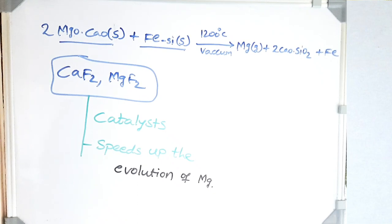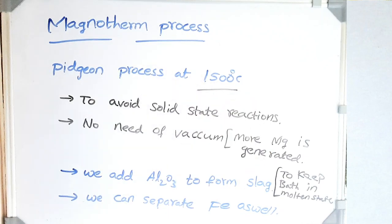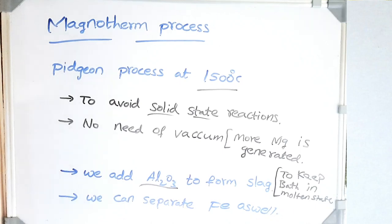The Magnotherm process operates at 1500°C to avoid solid–solid reaction issues. At this higher temperature, more magnesium is generated and we do not even need vacuum. Alumina is added to form slag and to keep the bath in liquid state, so all reactions occurring are not solid–solid reactions. The formation of slag also allows us to separate out iron easily.